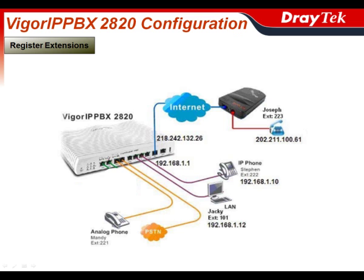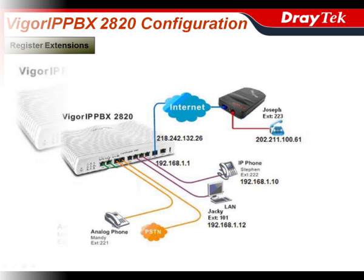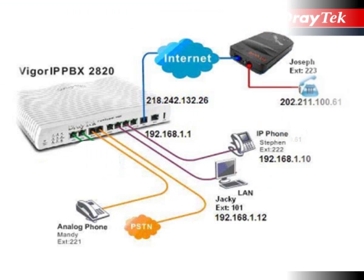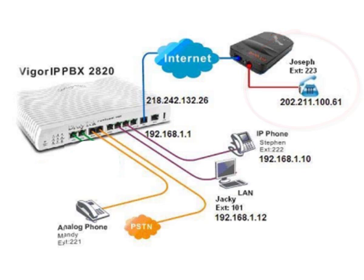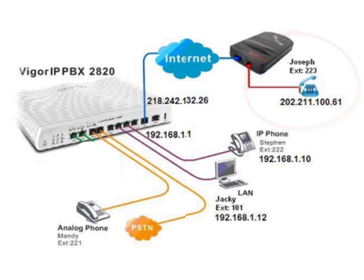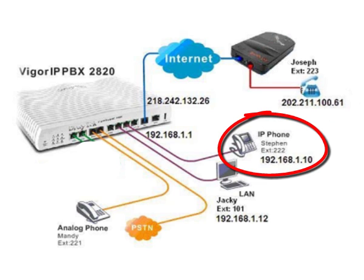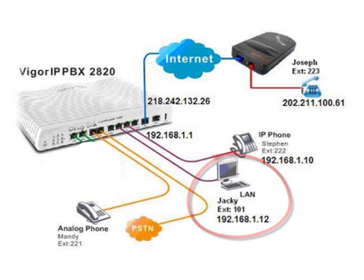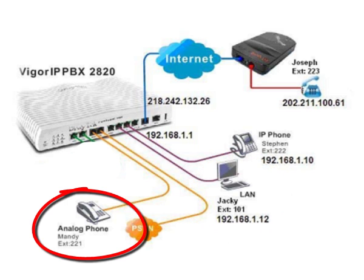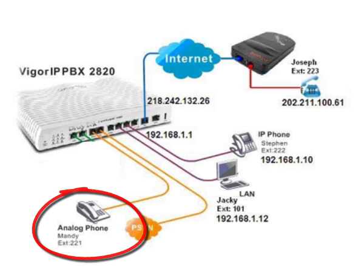We will configure four extensions: extension 223 for Joseph who is connecting remotely over the internet, extension 222 for Steven who has an IP phone, extension 101 for Jackie who is using a soft phone application on his laptop, and extension 221 for Mandy who has an analog phone.